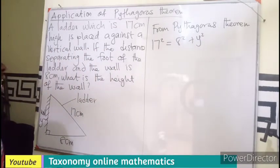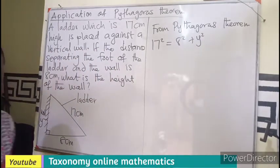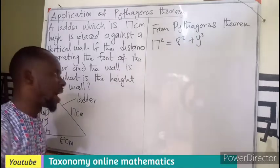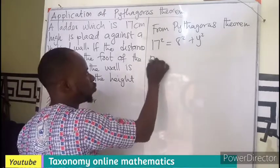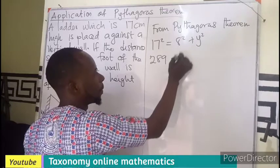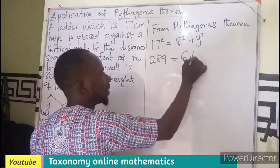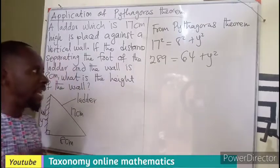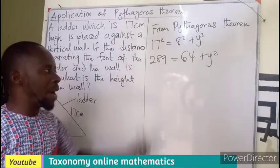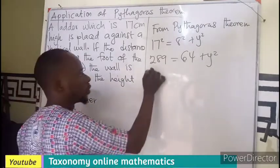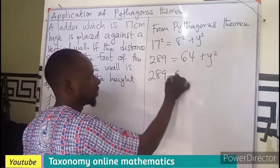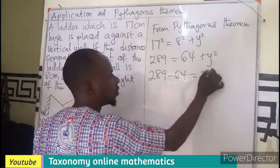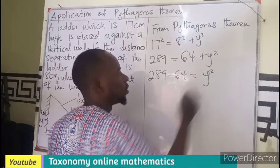So the longer side is 17. If you multiply 17 by itself we have 289, this is going to be 64. Then we have our Y squared in there. I believe this will come to this side. So 289 minus 64 equals to that.